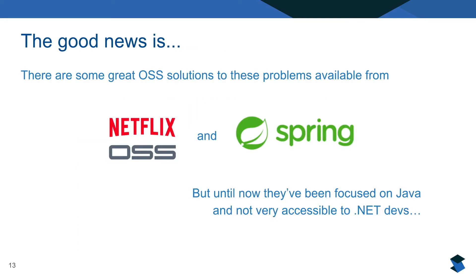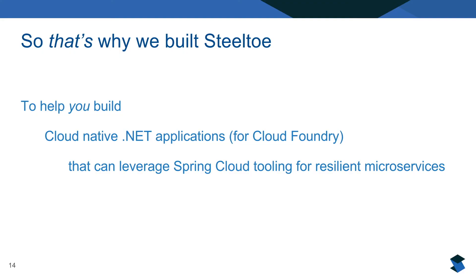The good news is that there are great open source solutions to these problems built by the folks at Netflix. The Spring community took a lot of that work and made it available to the broader Java community, even if you weren't running on AWS. But until now it hasn't really been accessible outside of the Java world. So the goal of SteelToe is to take that work and make it available to .NET developers — to help them build cloud-native applications that can leverage Spring Cloud tooling for resilient microservices.